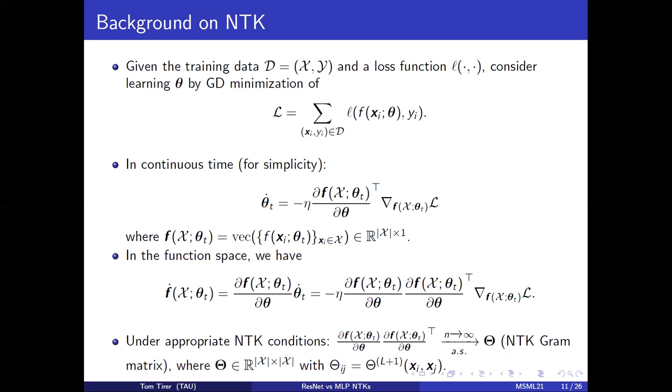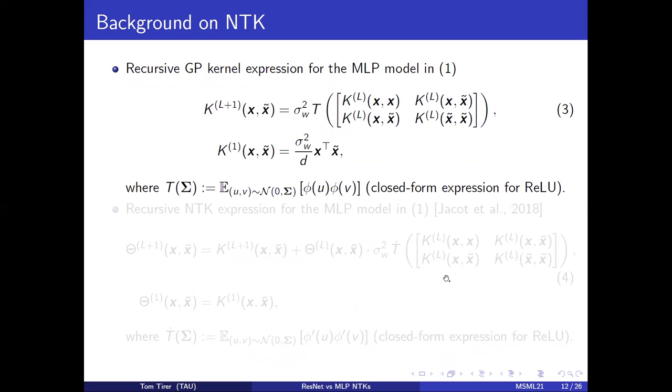Both just use the chain rule. Now, the key property is that under appropriate NTK conditions, this term here converges to the NTK Gram matrix. So that the complex dynamical system turns into kernel regression. And for L2 loss, it also has a closed form solution.